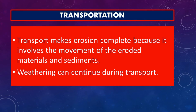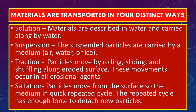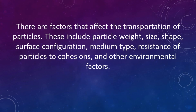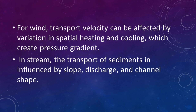Transportation makes erosion complete because it involves the movement of eroded materials and sediments; weathering can continue during transport. Materials are transported in four distinct ways: as solution, where materials are dissolved in water and carried along; as suspension, where suspended particles are carried by a medium such as air, water, or ice; as traction, where particles move by rolling, sliding, and shuffling along an eroded surface; and saltation, where particles move from the surface into the medium in quick repeated cycles with enough force to detach new particles. Factors affecting transportation include particle weight, size, shape, surface configuration, medium type, and resistance to cohesion. For wind, transport velocity is affected by spatial heating and cooling creating pressure gradients; for streams, transport is influenced by slope, discharge, and channel shape.